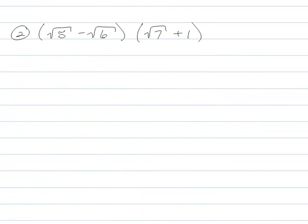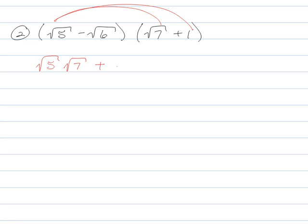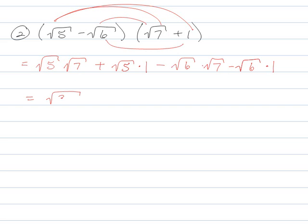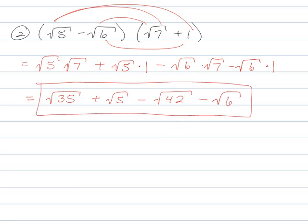Alright, let's look at the next one. This hopefully recognizes the FOIL method, right? So we've got first: √5 times √7. Outer: √5 times 1. Inner: √6 times √7. And then last: minus √6 times 1. So √5 · √7 combines to √35. Anything times one is just itself. √6 · √7 gives √42, since 6 times 7 is 42. Unfortunately, neither 35 nor 42 factors into a perfect square like 25, 16, 9, or 4. So we're just done.